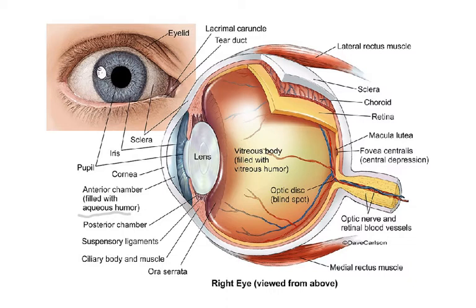The lens divides the eye into a front portion and a back portion. The anterior chamber is filled with a fluid called the aqueous humor, and the back area is filled with a fluid called the vitreous humor — this is jelly-like because it maintains the shape of the eyeball. Then there is the optic nerve, and inside it is a retinal blood vessel.